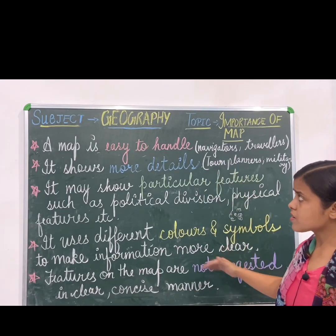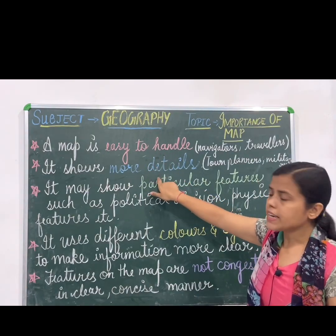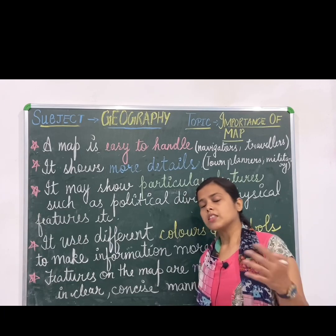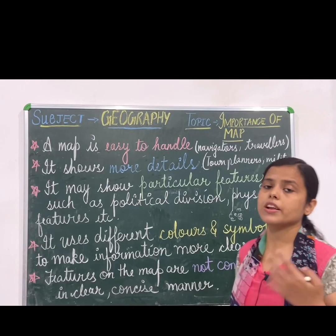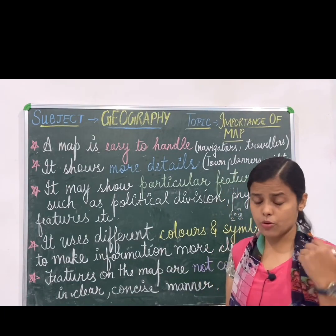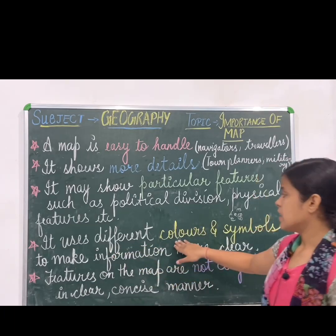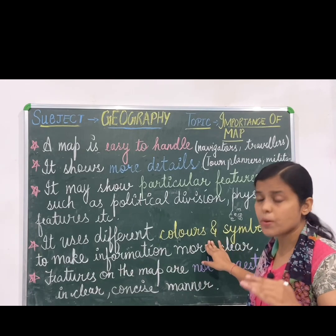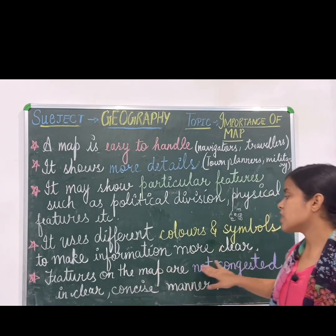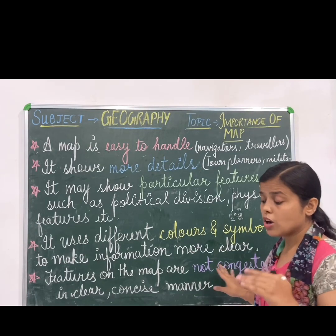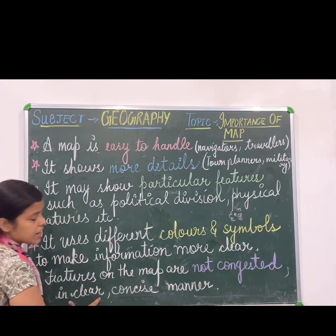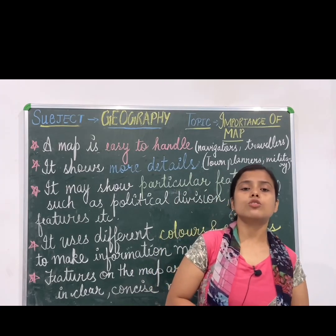Let's summarize quickly. First, the map is easy to handle. Second, it shows more details. Third, it shows particular features for different types of maps — thematic maps show theme-based features like population and climate distribution, physical maps show different landforms, and political maps show boundary lines. Fourth, it uses different colors and symbols — conventional symbols — which makes things very clear and easy to understand. Fifth, things on the map are not congested; it shows everything in a very clear and concise manner. That's all for today. Thank you.